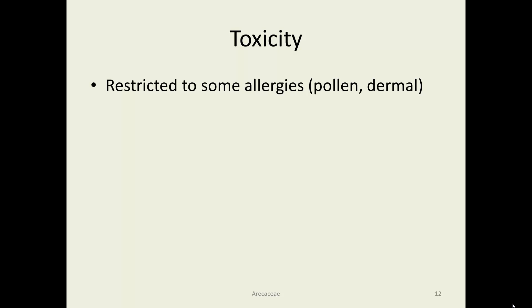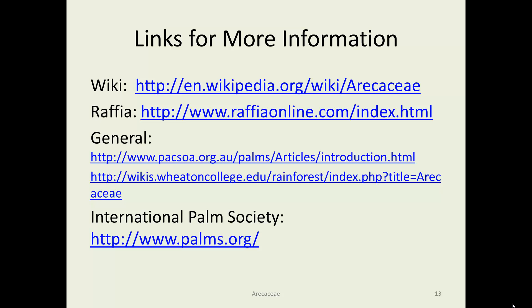As for toxicity, this plant family doesn't seem to be too dangerous. There are a few people who are allergic to coconut, and since these plants produce a lot of pollen due to wind pollination, they can sometimes cause allergies in sensitive people. Some people who handle the plants frequently — harvesting coconuts, working with coir or raffia — can get some dermal irritations, but nothing too serious. For more information, there's Wikipedia, a large website dedicated to raffia, some general scholarly sites, and additionally there is an International Palm Society. That concludes the Arecaceae.